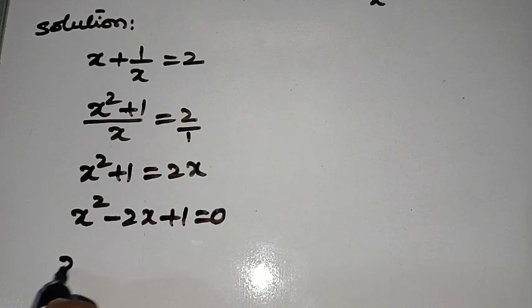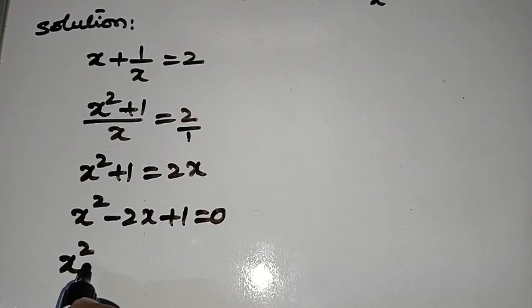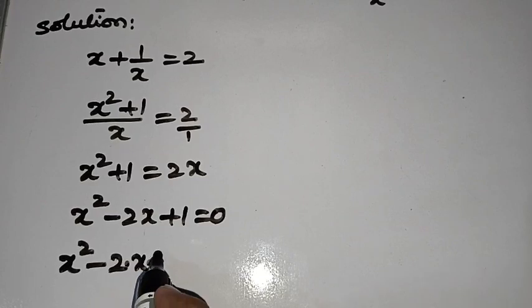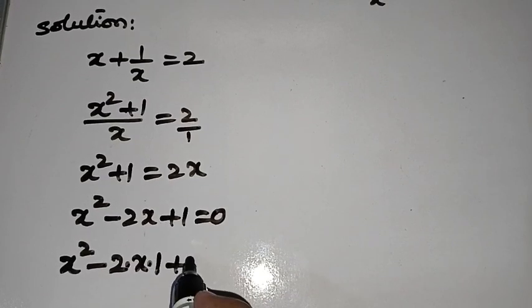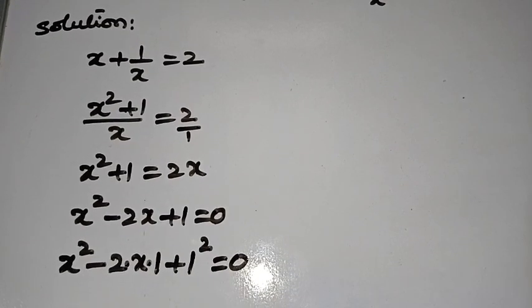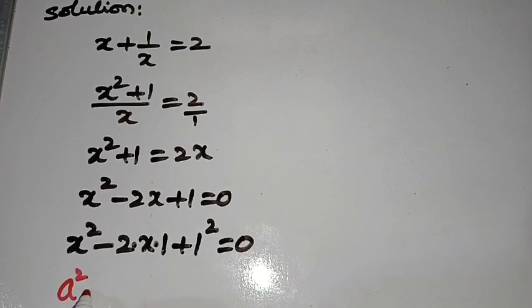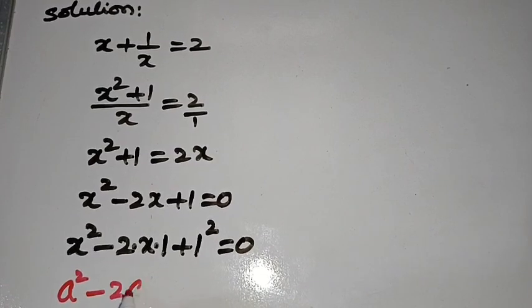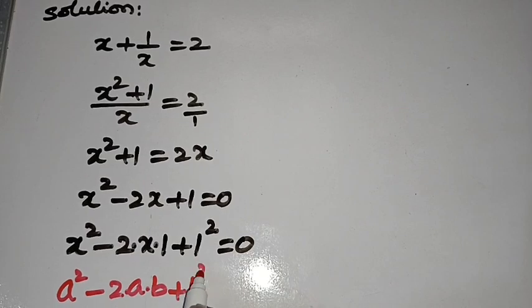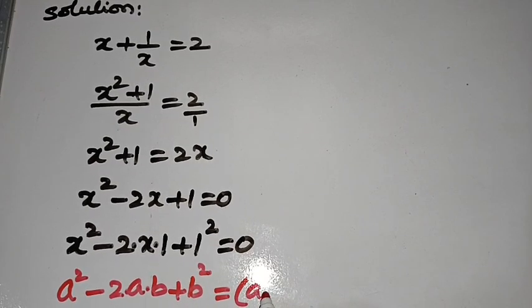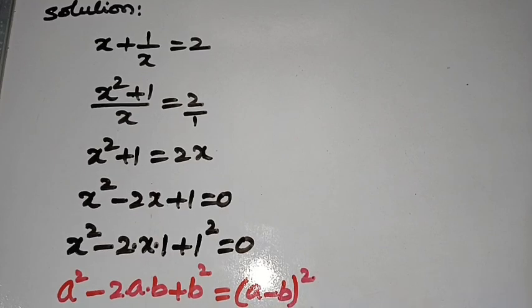This is actually x square minus 2 times x times 1 plus 1 can be written as 1 square is equal to 0. If we see here, it is of the type a square minus 2ab plus b square, and we know that this is equal to a minus b whole square.